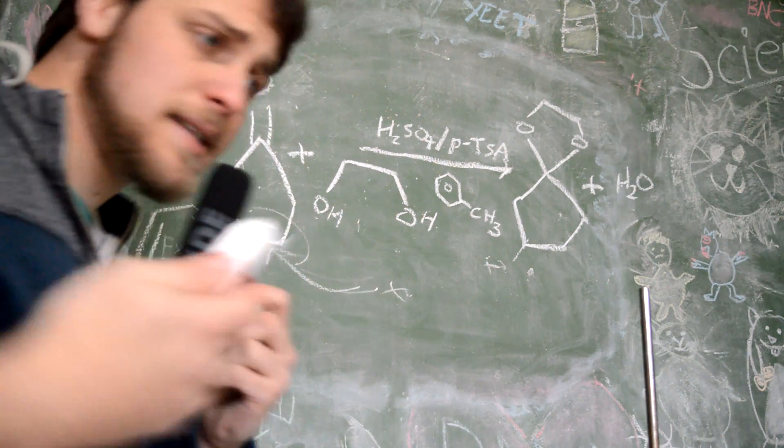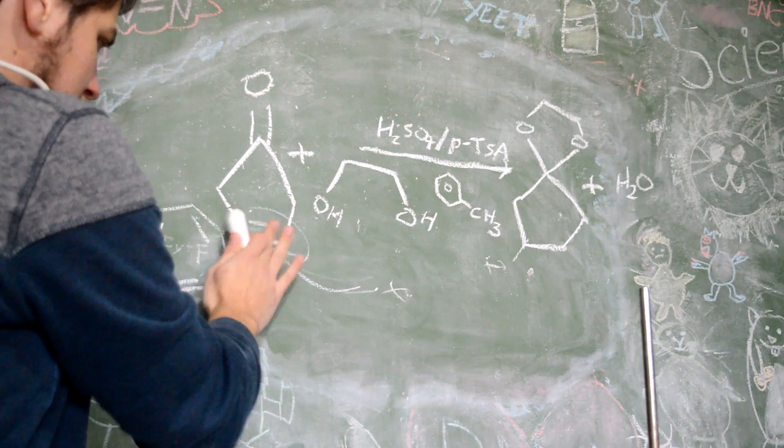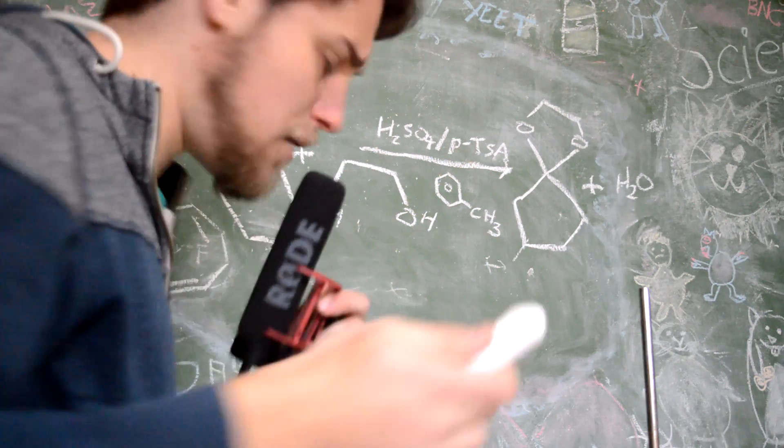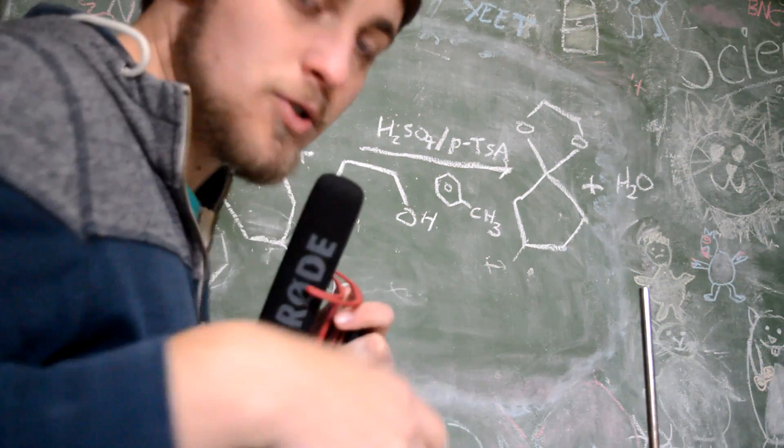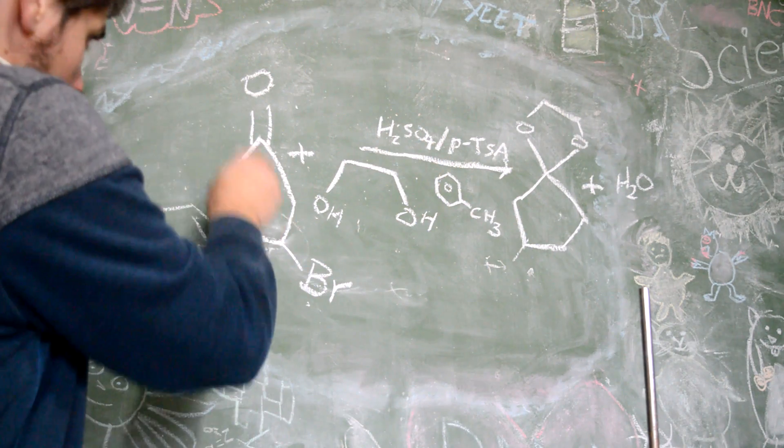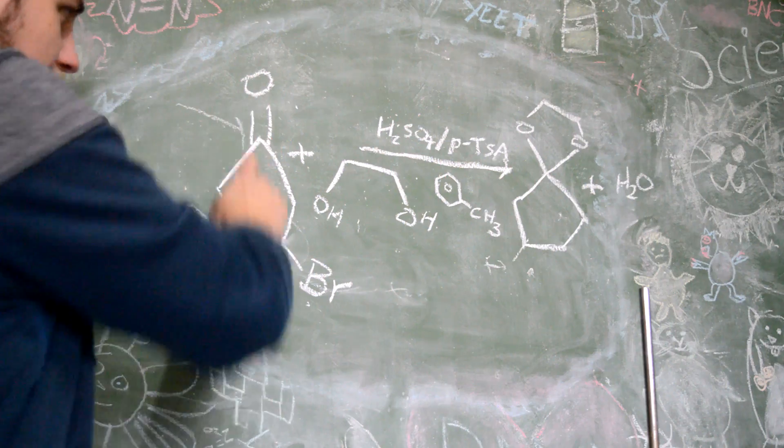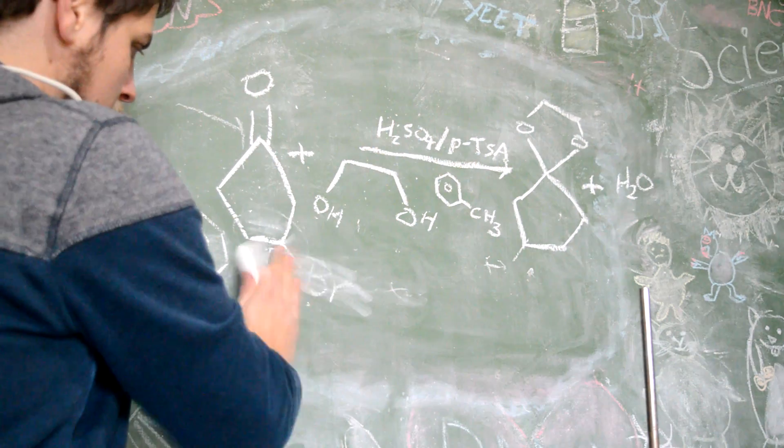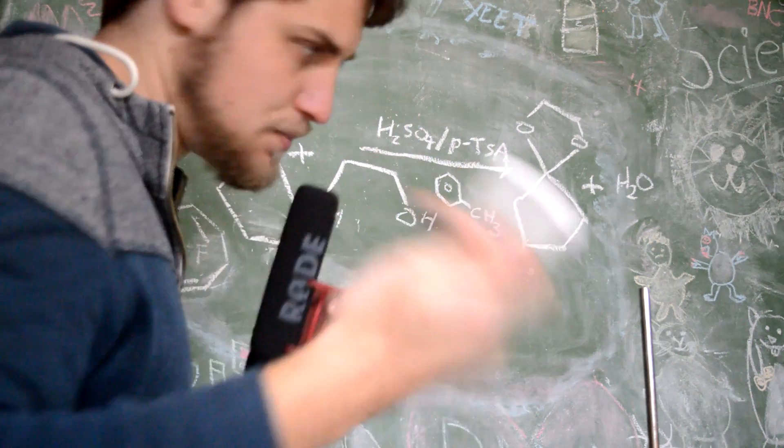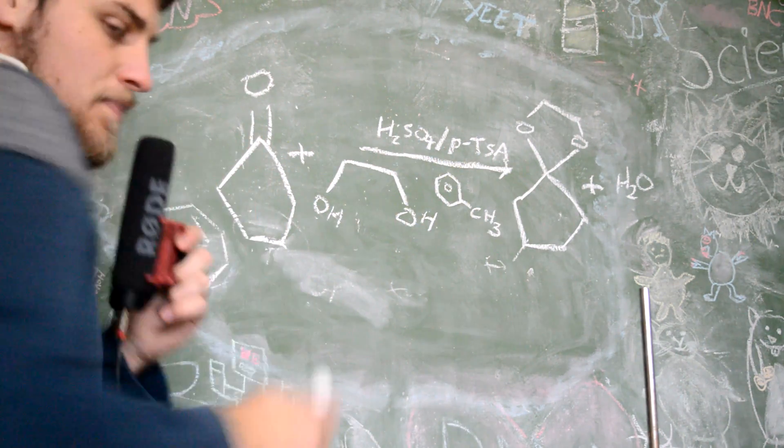And then later on, you can have some conditions to remove this and put that back on there plus your extra group, which is basically exactly what we're doing. It's quite a common reaction to use ethylene glycol as a protecting group for a ketone.